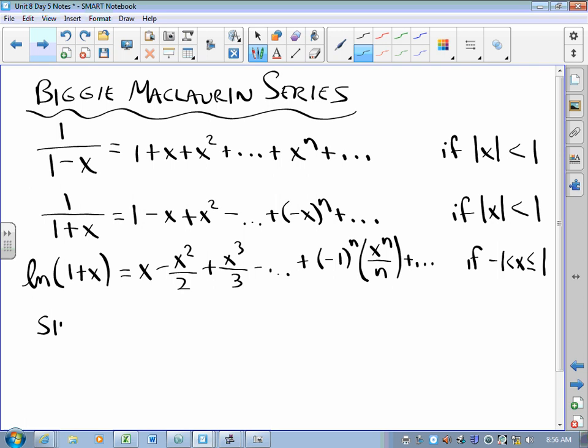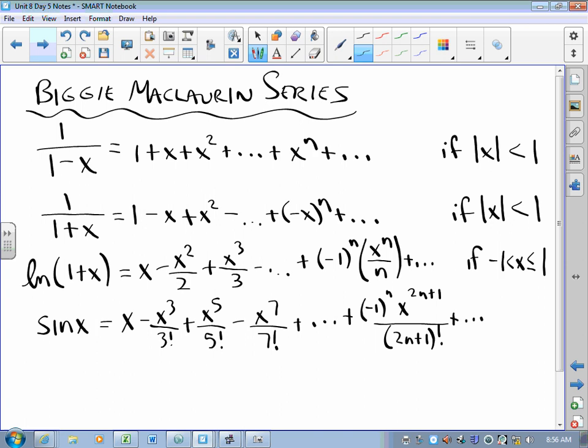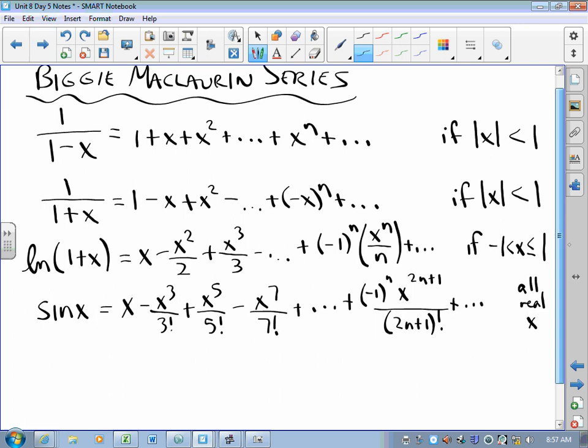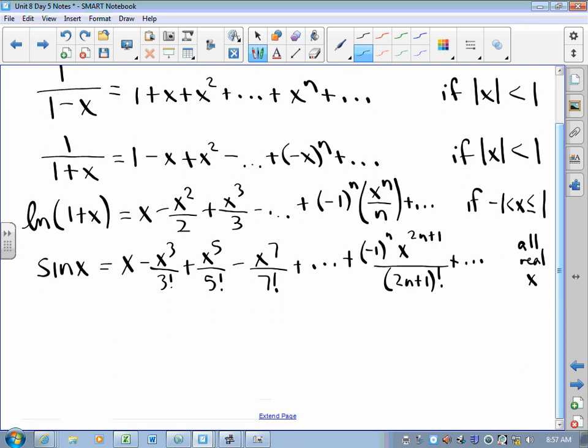Then there are other biggies, the ones that pop up all over the test. sin(x) is all your odd powers divided by your odd factorials in an alternating fashion. The nth term is (-1)^n x^(2n+1)/(2n+1)!. This converges for all real x. It converges all the time.